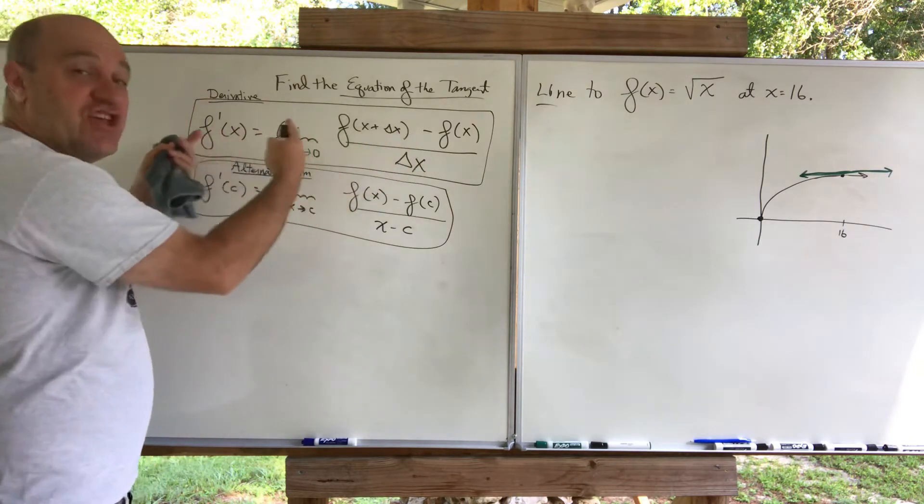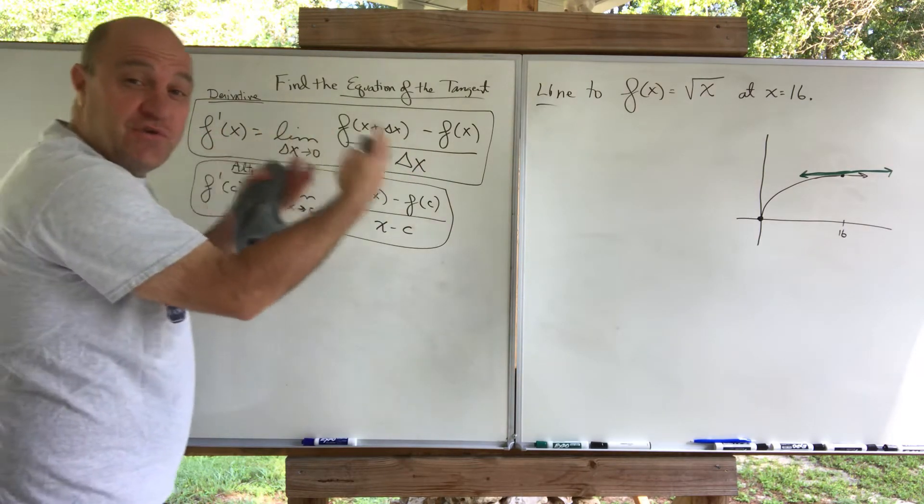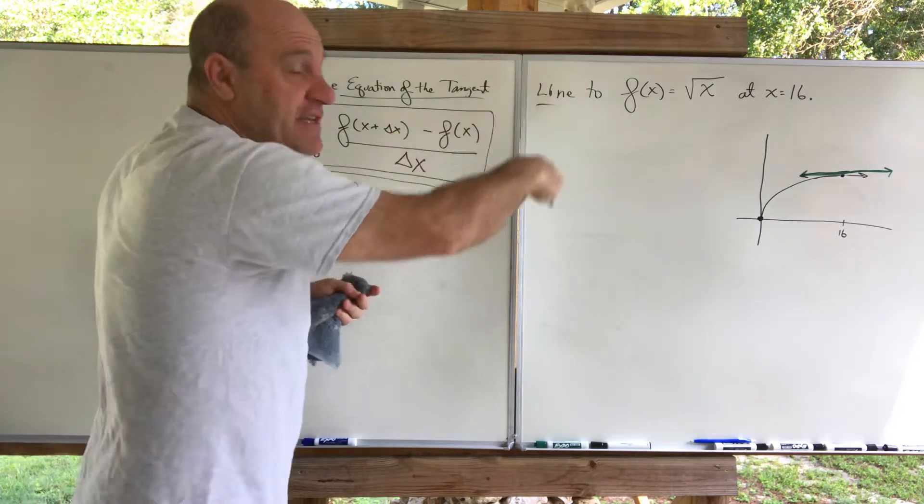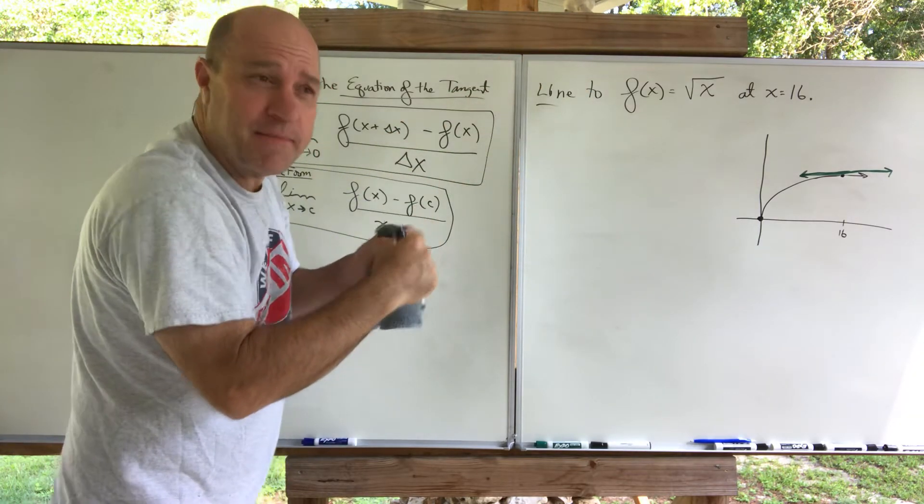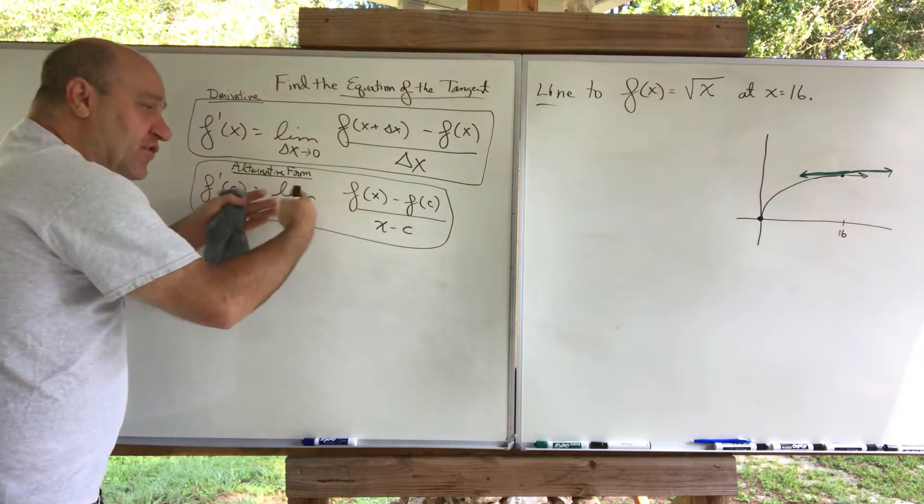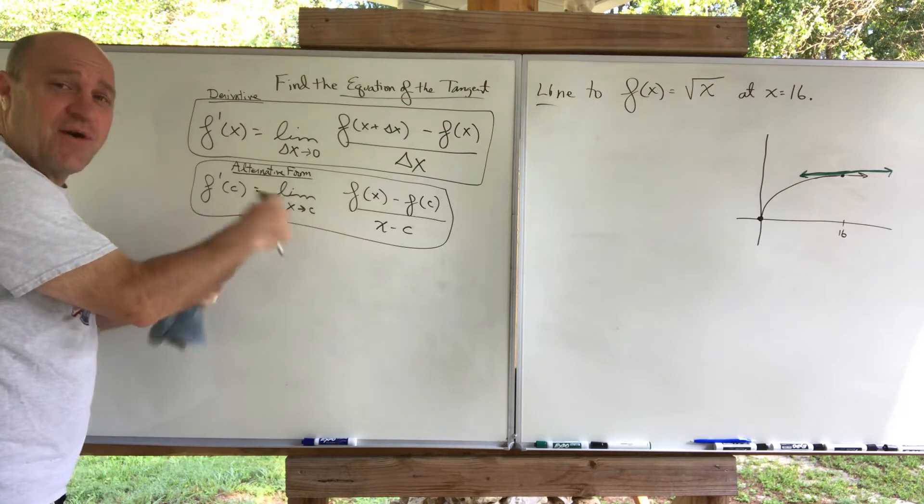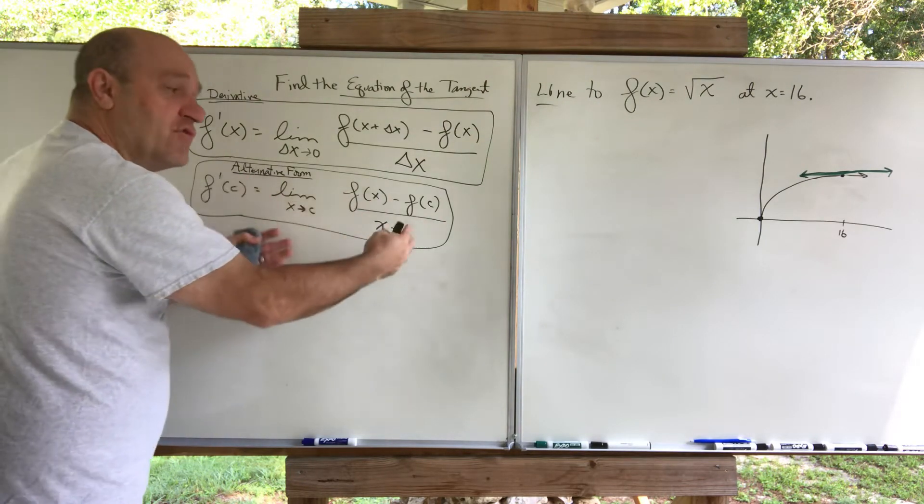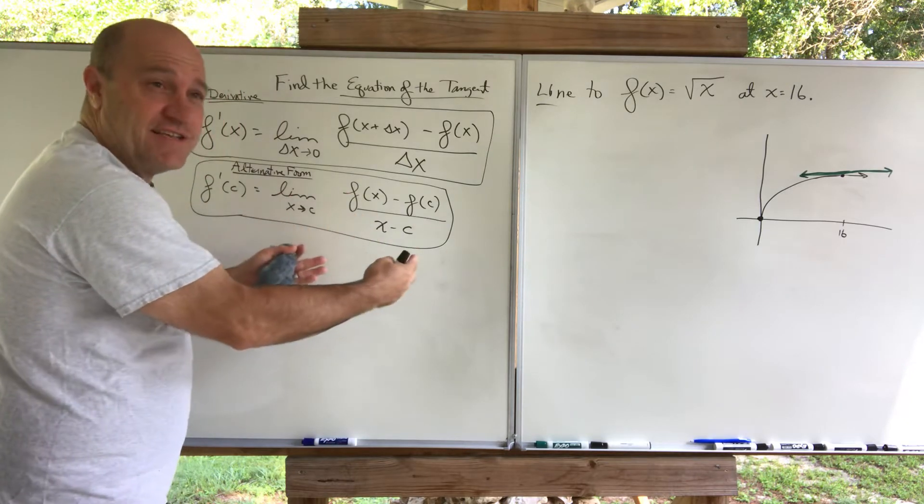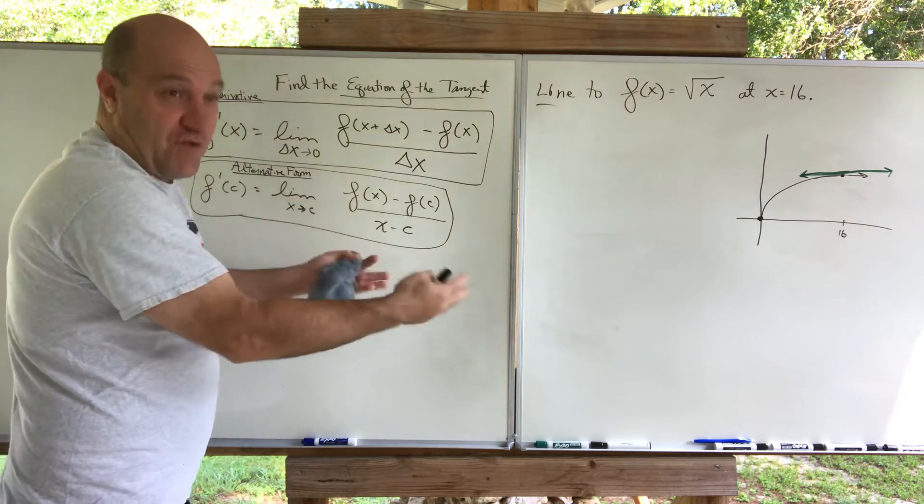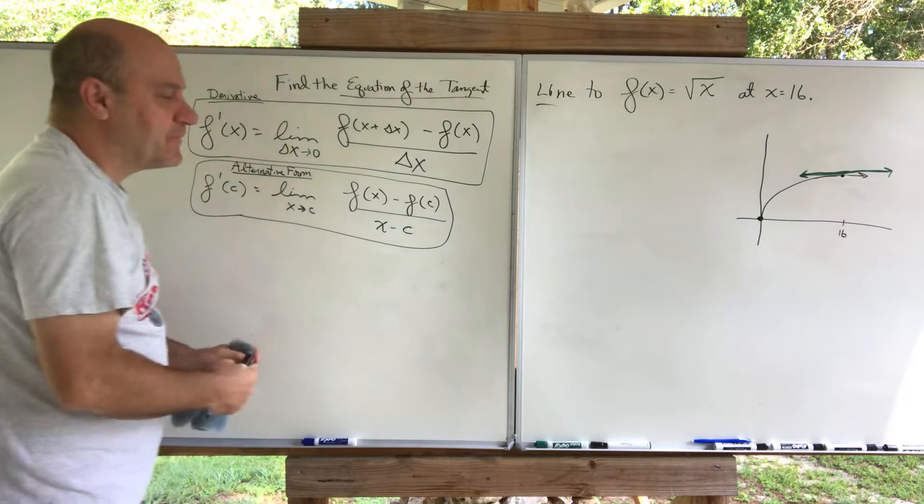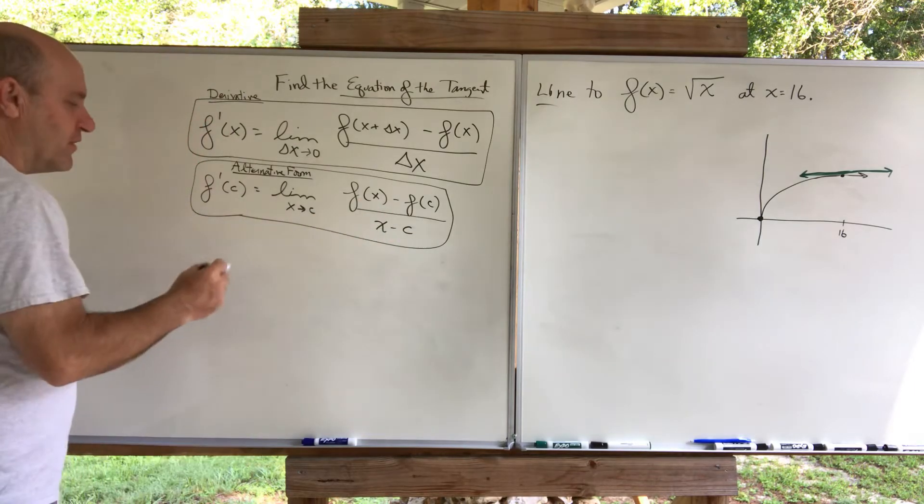You can do the derivative in general at any x. When you get the derivative, then you plug in the 16 to get the slope at that point. Or, during the derivative process, you can go ahead and plug in the 16. And then you get, the answer to this is the slope when x is 16. So let's try this. Here I go. I want to do this. So I want to do f prime of 16.